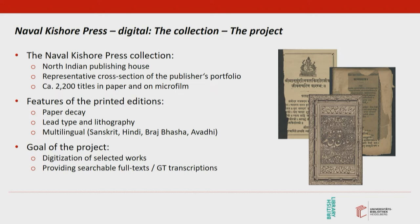There are many bilingual books in the collection — for example, classical Sanskrit texts with Hindi commentaries, or texts in Brajbhasha, a literary language common before the standardization of modern Hindi. Commercial OCR software, which does exist, usually does not provide good recognition results for bilingual or multilingual text because it relies on inbuilt dictionaries. So when we started our project with Transkribus in 2018, the aim was to digitize selected works from the Devanagari section, provide searchable full text, and make ground truth data available for reuse.